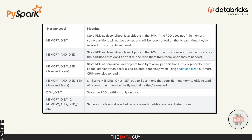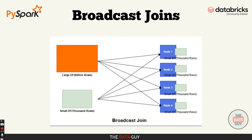Next, let's move on to broadcast joins. This is an awesome optimization trick that's really useful when you're working with large datasets and want to speed up joins. When Spark performs a regular join between two data frames, it needs to shuffle the data across your cluster so that rows with matching keys end up on the same partition. This is called a shuffle join. Shuffling data can be really expensive — it involves moving large amounts of data across the network, which can slow down your Spark job, especially when joining two large datasets. A broadcast join skips this costly shuffle by broadcasting small data frames to all the worker nodes in your cluster.